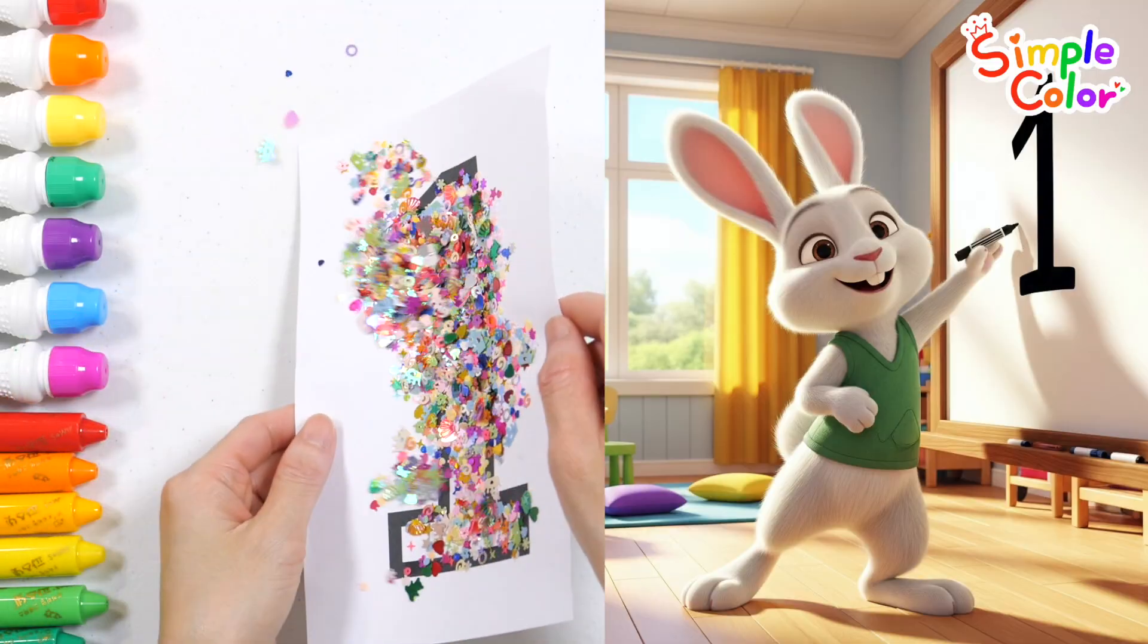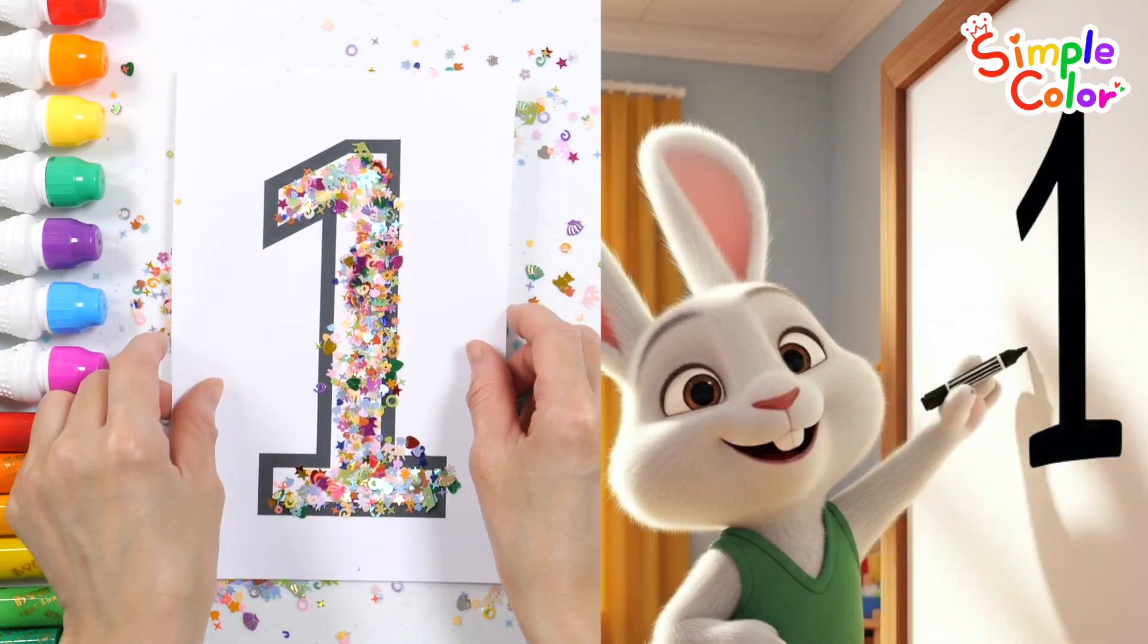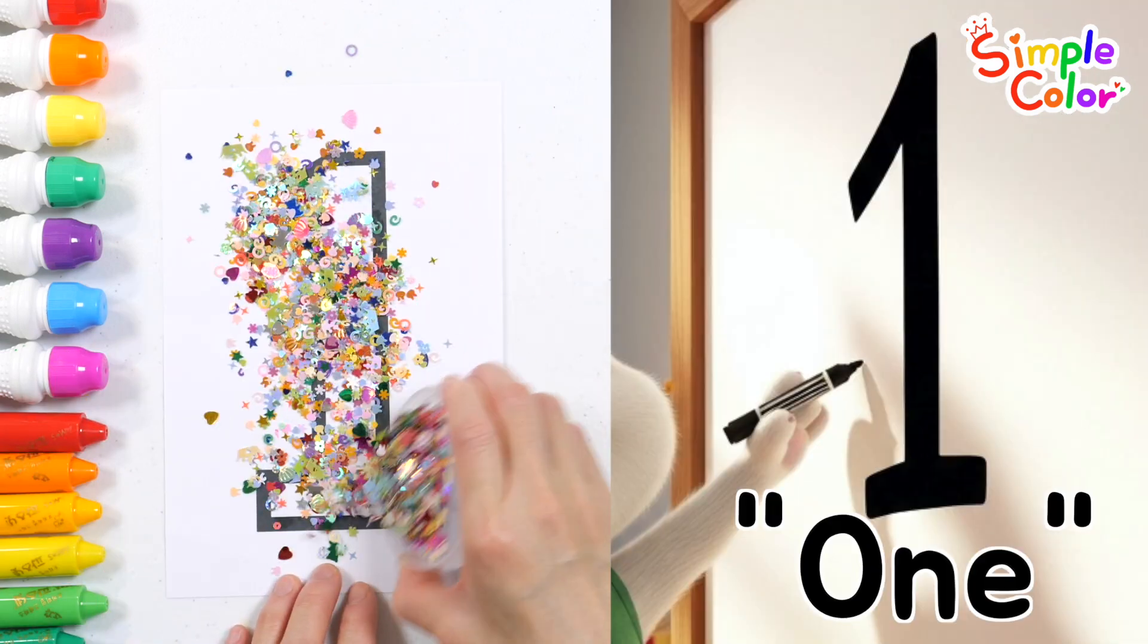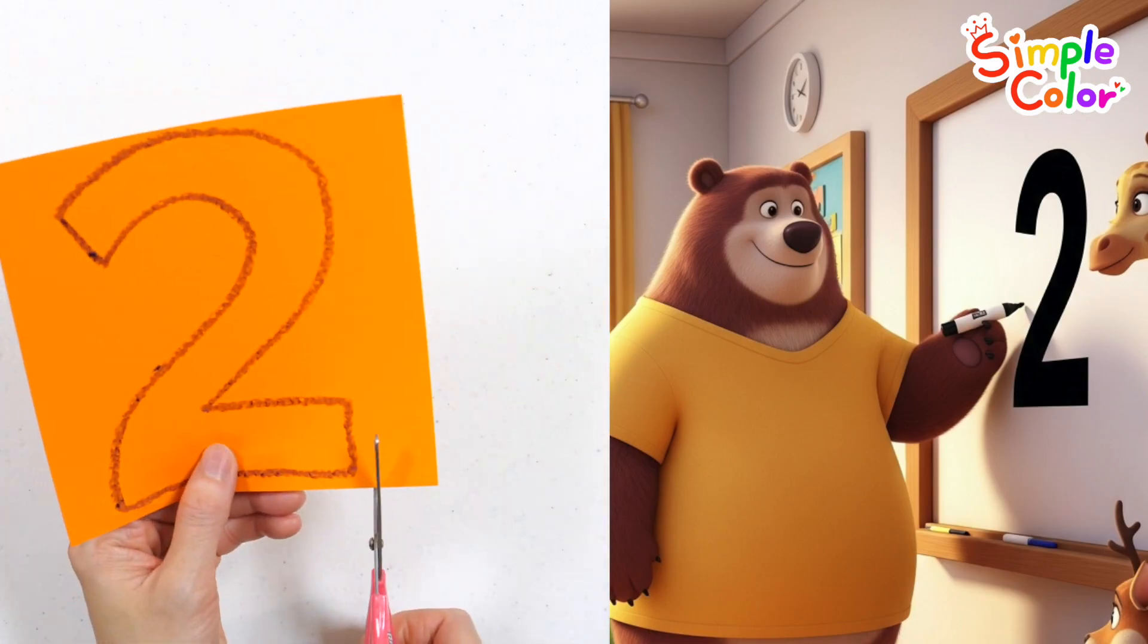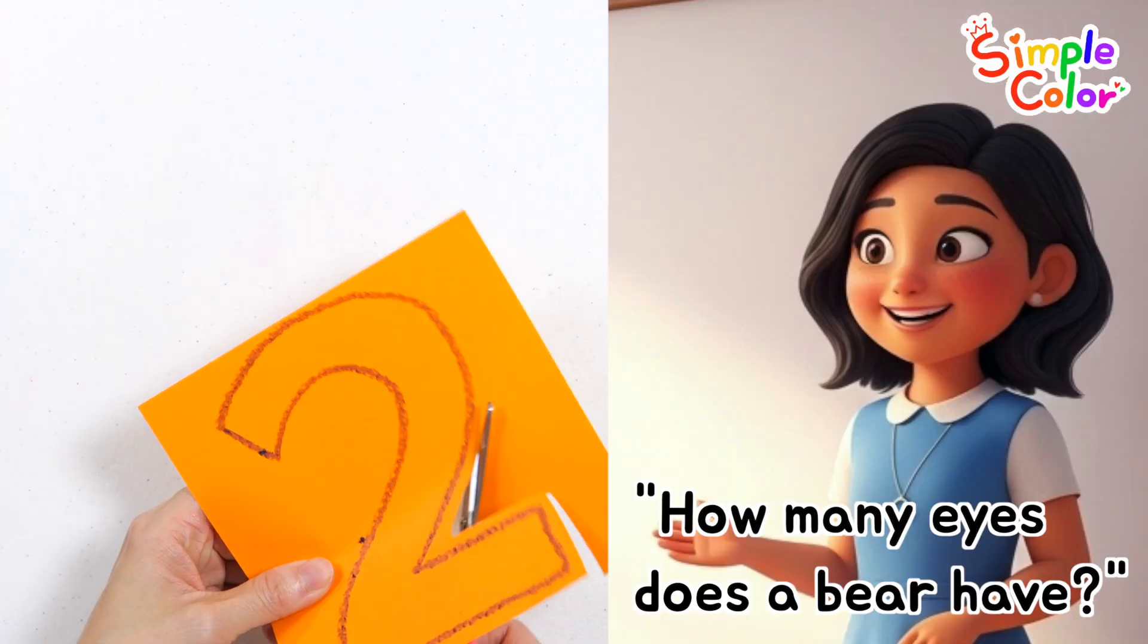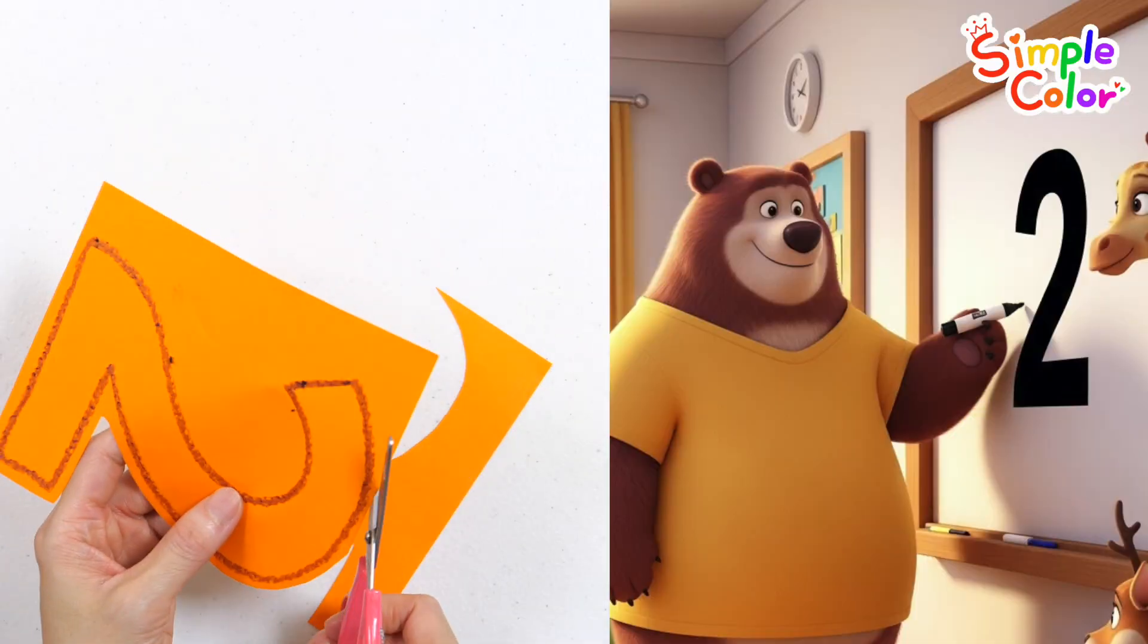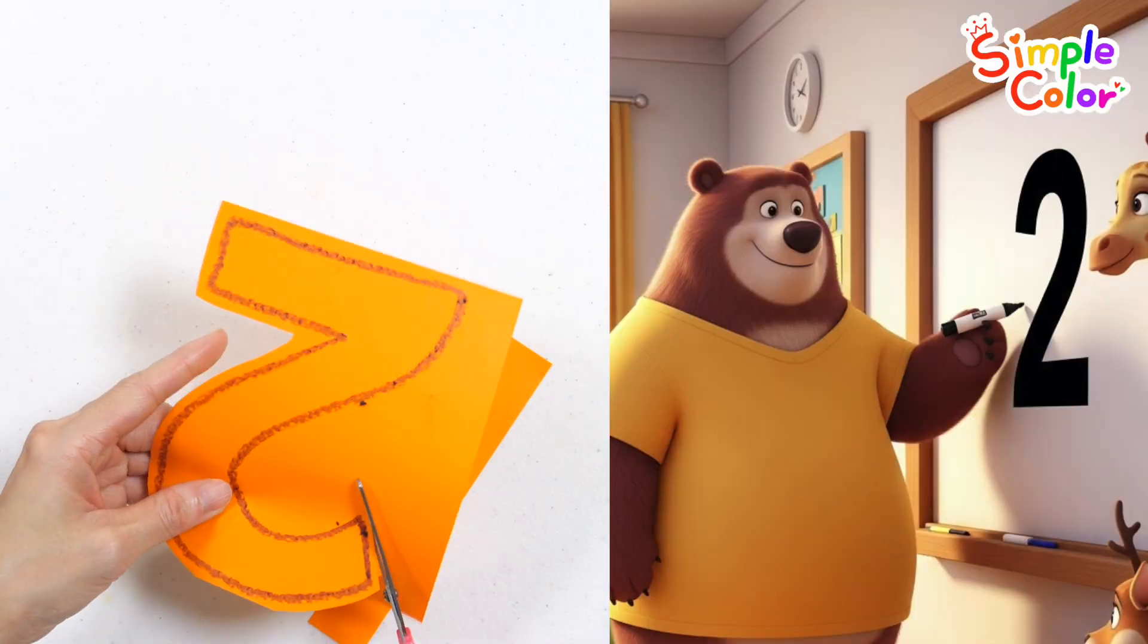First, the bunny hops up to the board and writes the number one. What number is this? One. One. Next, the teacher asks the big bear who came to the board. How many eyes does a bear have? Two! The bear writes the number two on the board.